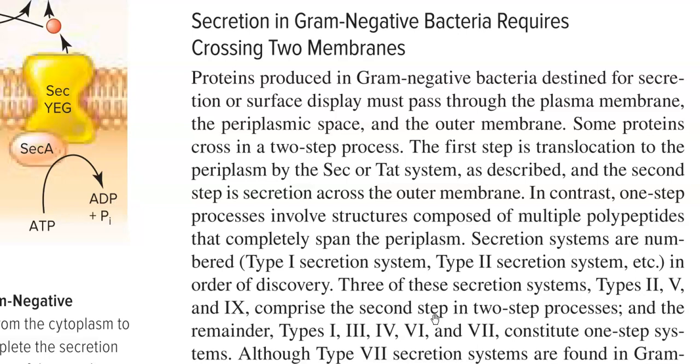The first step involves translocation to the periplasm, mediated by the Sec or TAT system. In the second step, a secretion system helps in crossing the protein across the outer membrane. These secretion systems are numbered from type 1 to type 9 based on the order of their discovery. Type 2, type 5, and type 9 secretion systems comprise the second step in a two-step process for secretion.